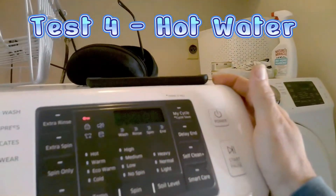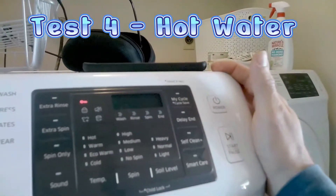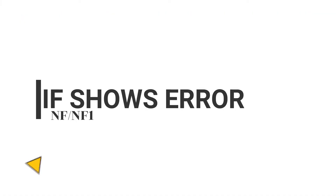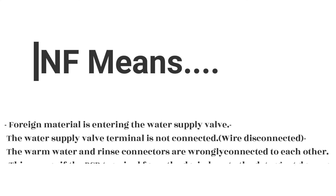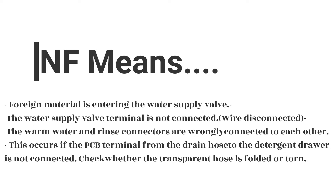Test four: hot water inlet valve test. This will show the same type of error codes — NF and NF1 — with the same causes: foreign material in the water supply valve, terminal not connected, wire disconnected, warm water and rinse connectors wrongly connected, PCB terminal from drain hose to detergent drawer not connected, or the transparent hose is folded or torn.